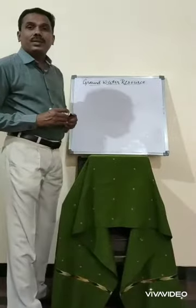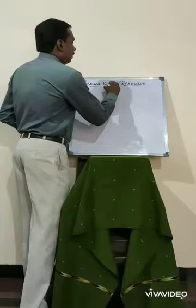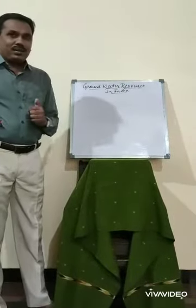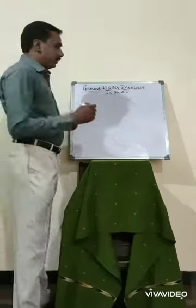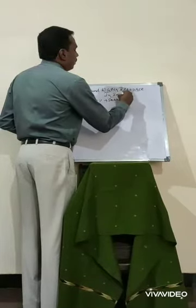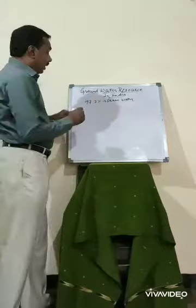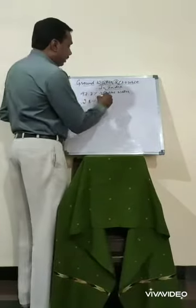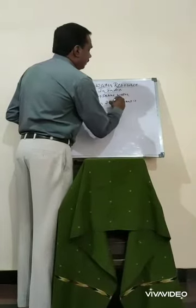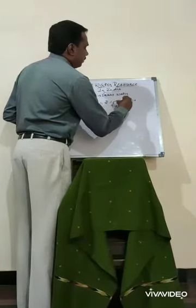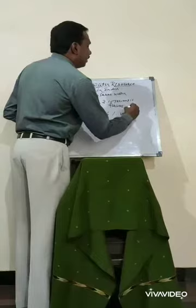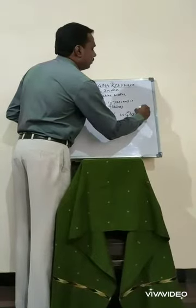In this class I'm going to explain the groundwater source in India. We all know that saline water is 97.2% of total water. Out of the remaining 2.8%, glaciers account for 2.15% and groundwater is 0.6%.